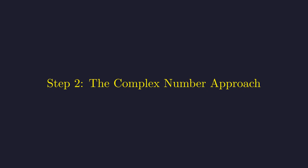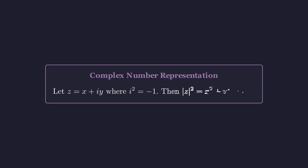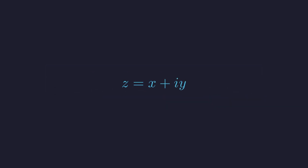Here's where we use a powerful technique: representing this system using complex numbers. We represent the point (x, y) as a complex number z equals x plus iy, where i is the imaginary unit. The magnitude squared equals x squared plus y squared, which also equals z times its conjugate z-bar.